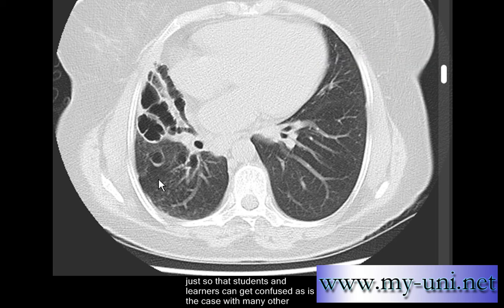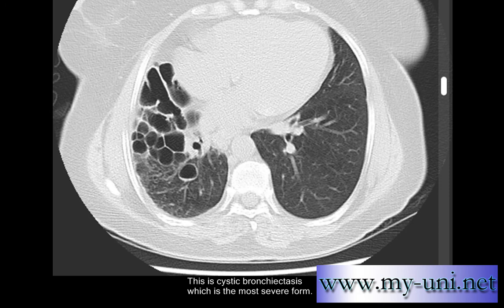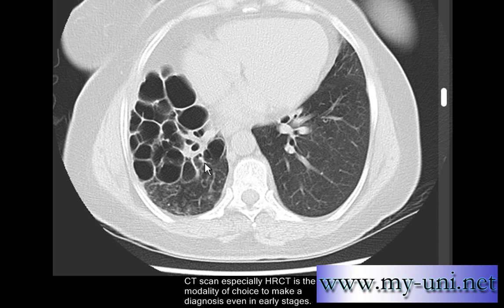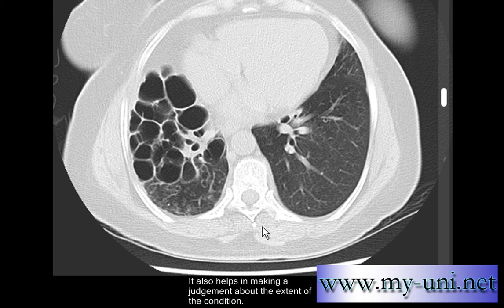The condition is classified into several types, and some types often have more than one name. This is cystic bronchiectasis, which is the severe form — notice the large number of cysts. Almost half or more than half of this patient's lung is non-functional. HRCT is the modality of choice to make the diagnosis even in early stages.